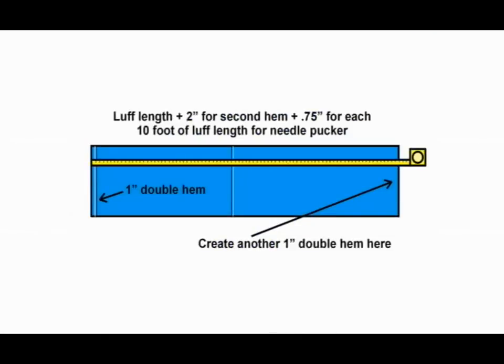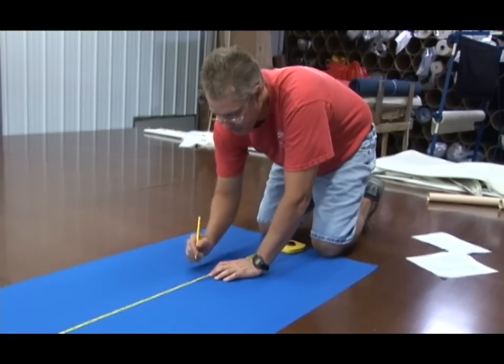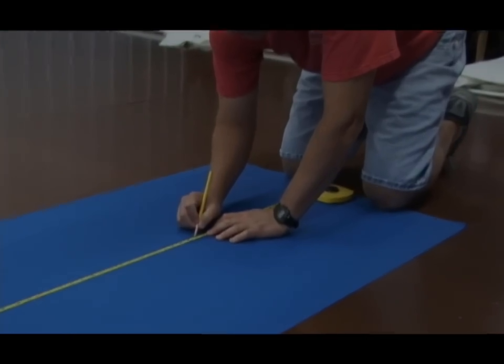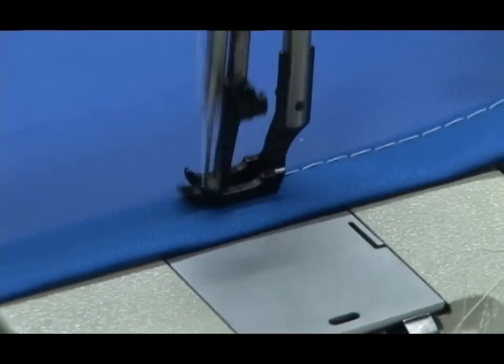The other edge will need to be measured first, then we'll create a double hem there as well. At the start of this video we talked about measuring for the length. We'll take the luff length plus two inches for the second hem that we're going to add and we'll add 0.75 inches for every 10 foot of luff length for any kind of needle pucker, which usually ends up in reducing the length of the panel. So after you have that calculation, measure from your first double hem that you created and now we're going to make a second double hem on the far opposite edge.